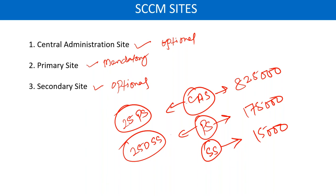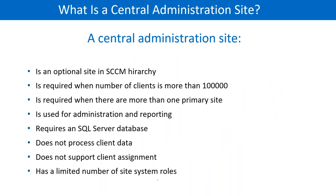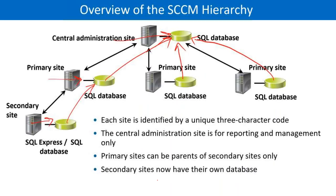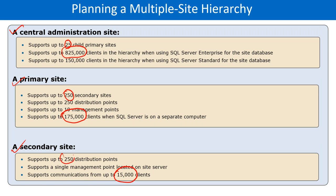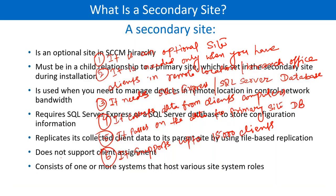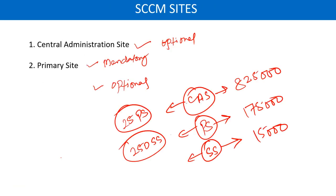Secondary site supports up to 250 distribution points. We will talk about what distribution points and management points are in the next session.